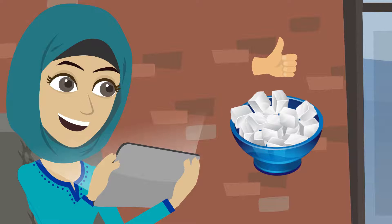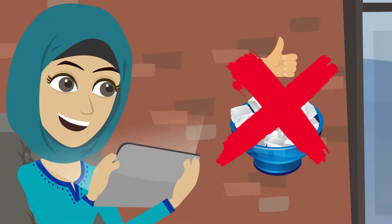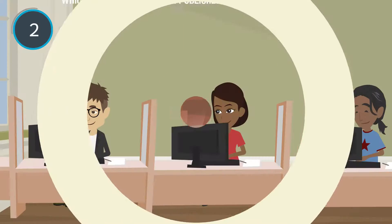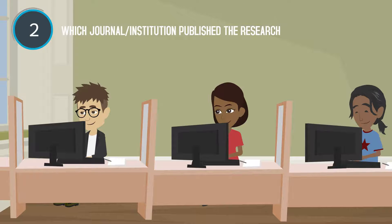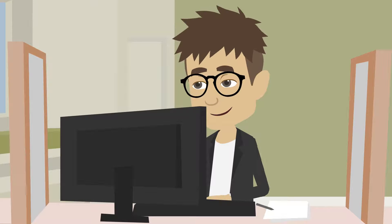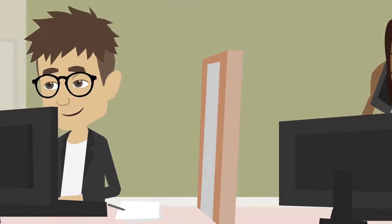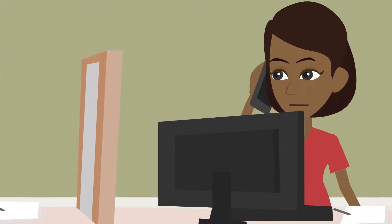Which journal or institution published the research? The journal or institution must have a good reputation of performing good research. Simply searching for more information about the website where you're finding the research will provide insight into whether it is credible or not.